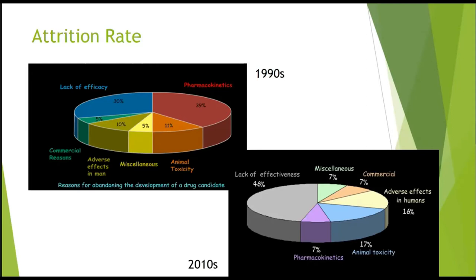The attrition rate due to pharmacokinetic reasons has decreased from 39% in the past to a current negligible 7% — showing how in silico methods have changed the game. Animal toxicity, adverse reactions, commercial, and other issues are among the remaining attrition reasons.